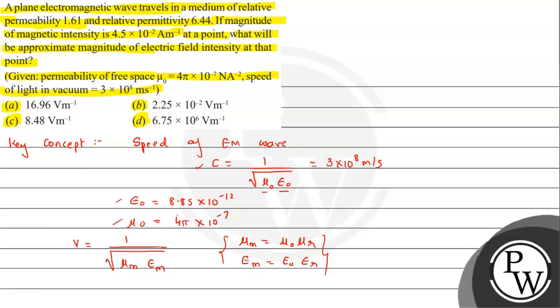From this situation, we can see that we have a particular relative permeability given and we have the magnitude of magnetic intensity. At a point, what will be the approximate electric field intensity?